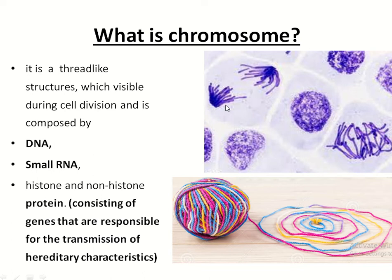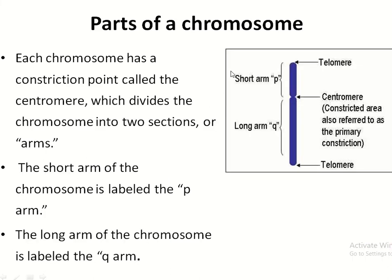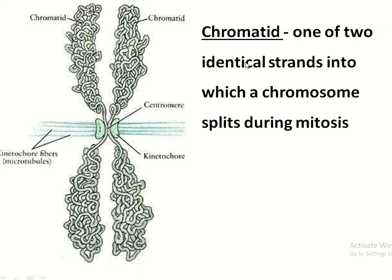Chromatin is only seen in the resting cell. In the dividing cell, mitosis occurs, so during mitotic cell divisions the chromosome becomes visible. The parts of the chromosome are the short p-arm and the long q-arm, and each arm is attached at the centromere.